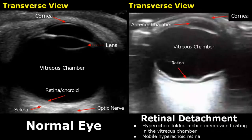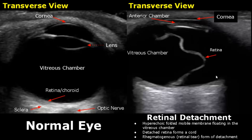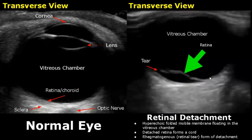In retinal detachment the retina is separated, and we will see a hyperechoic folded membrane floating in the vitreous chamber. In this image the detached retina forms a cord attached from one end and moves around in the vitreous chamber. A retinal detachment in which there is a hole or tear in the retina is called rhegmatogenous detachment. Here is another image of rhegmatogenous detachment where a tear can be seen in the retina, confirming it.